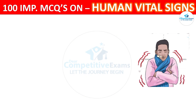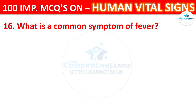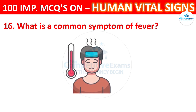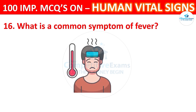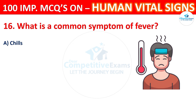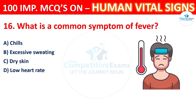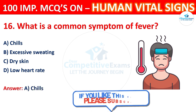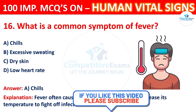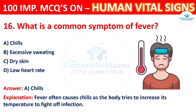Question 16: What is a common symptom of fever? Options: chills, excessive sweating, dry skin, or low heart rate. The correct answer is A, chills. Fever often causes chills as the body tries to increase its temperature to fight off infection.